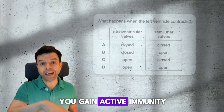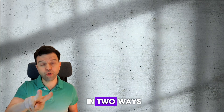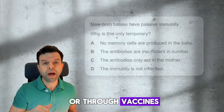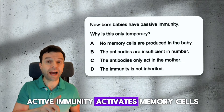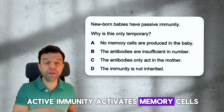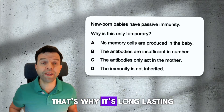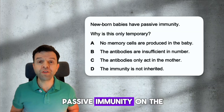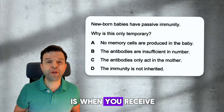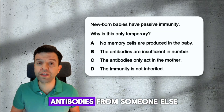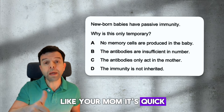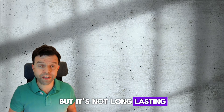You gain active immunity in two ways: either from an infection or through vaccines. Active immunity activates memory cells, that's why it's long-lasting. Passive immunity, on the other hand, is when you receive antibodies from someone else, like your mom. It's quick, but it's not long-lasting.